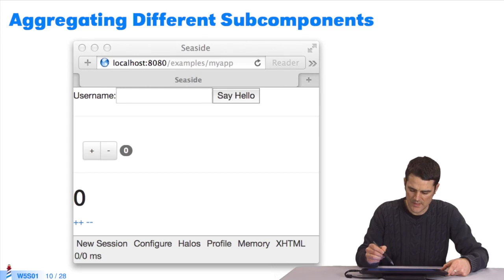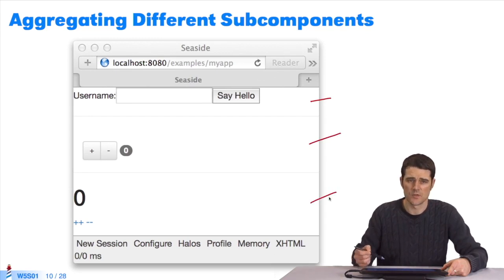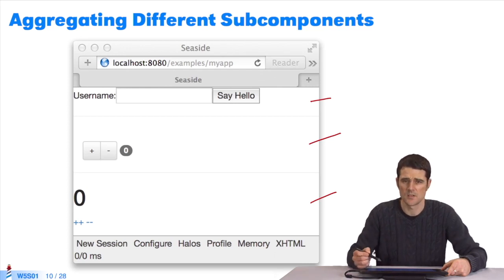Let's see what we get. Here we have the greeter component displayed on the webpage. We've the Twitter counter displayed here, and the normal counter displayed here. We've composed the components, and they all work independently. If I click on the plus and say hello, the components work perfectly.